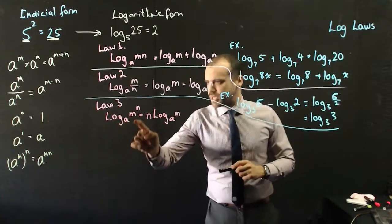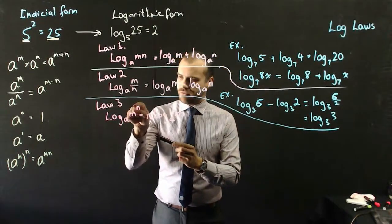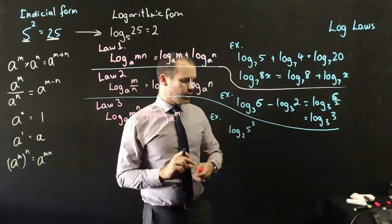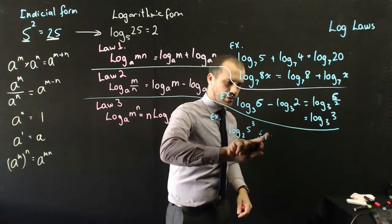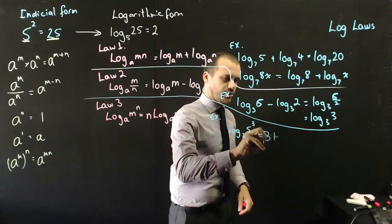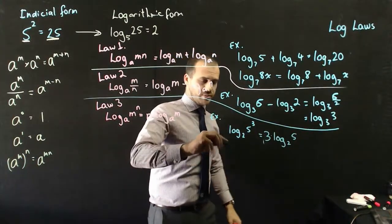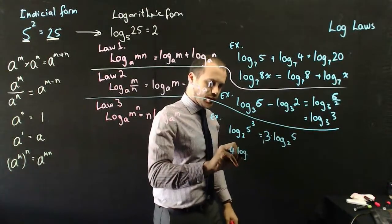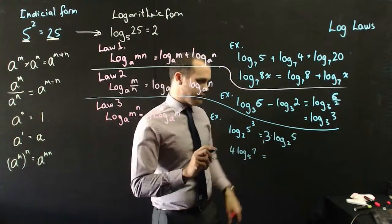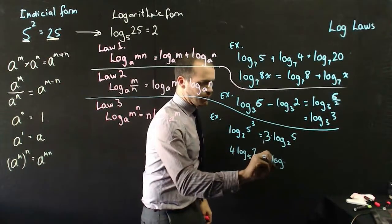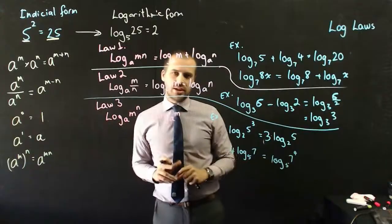This is a really useful log law: log base a of m to the power of n equals n times log base a of m. When you come across something like this, you can shift the n from the power out to the front. So log base 2 of 5 to the power of 3 can be rewritten as 3 log base 2 of 5. It's also useful in reverse — 4 log base 5 of 7 can be rewritten as log base 5 of 7 to the 4.